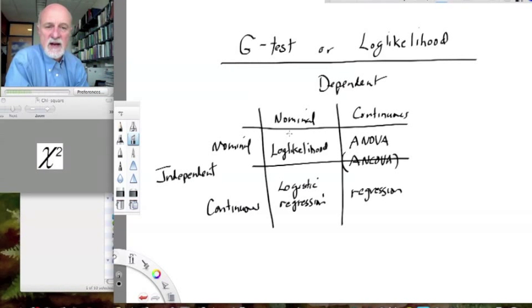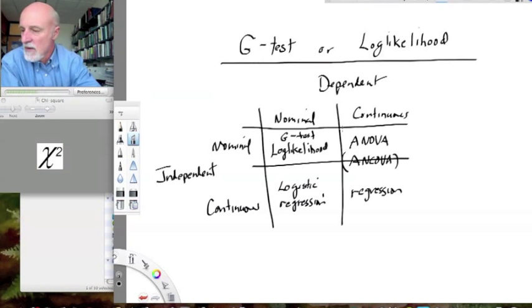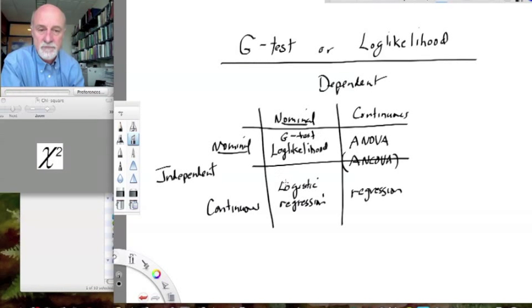So, almost any time you are tempted to use a chi-square test, think about using log likelihood instead. What exactly is it? What kind of question are we talking about? Well, obviously from this table, we have a nominal independent variable and a nominal dependent variable. And again, we can have multiple nominal independent variables and a nominal dependent variable.